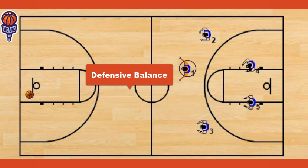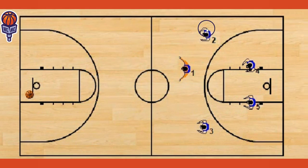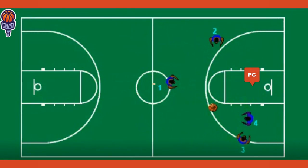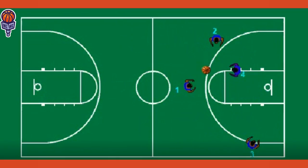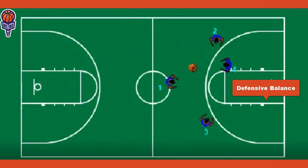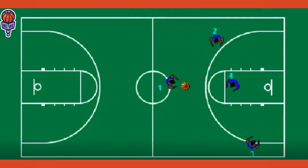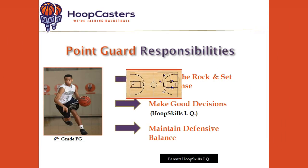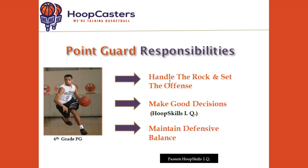One of the main purposes of the point guard is to get back and keep defensive balance. He has to get back on defense to protect the basket until his guys can get back and get in the mix with him. Getting back and protecting the basket simply means the point guard is in the best position to help maintain defensive balance. As you can see here, these guys have to hustle back on defense to create great balance.